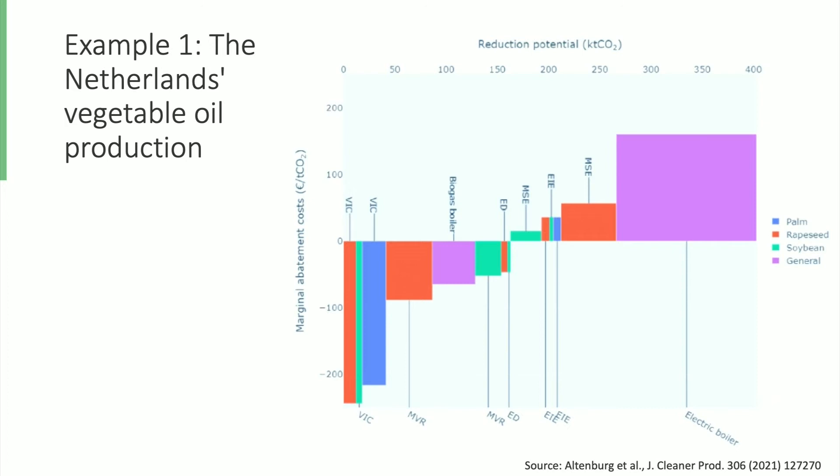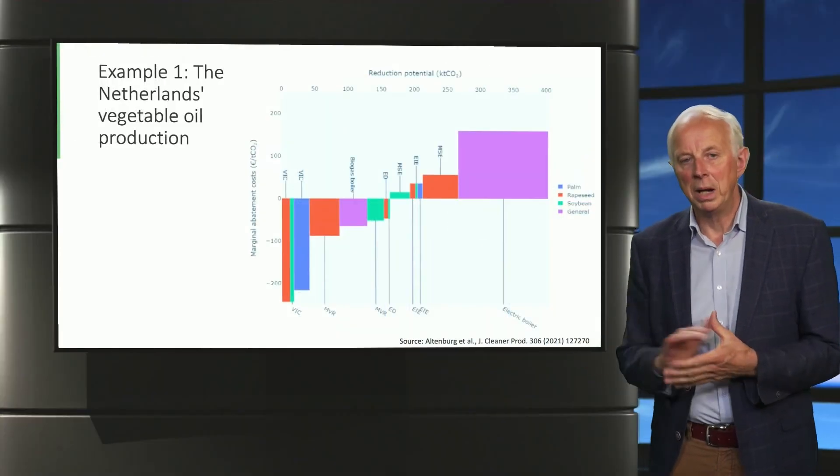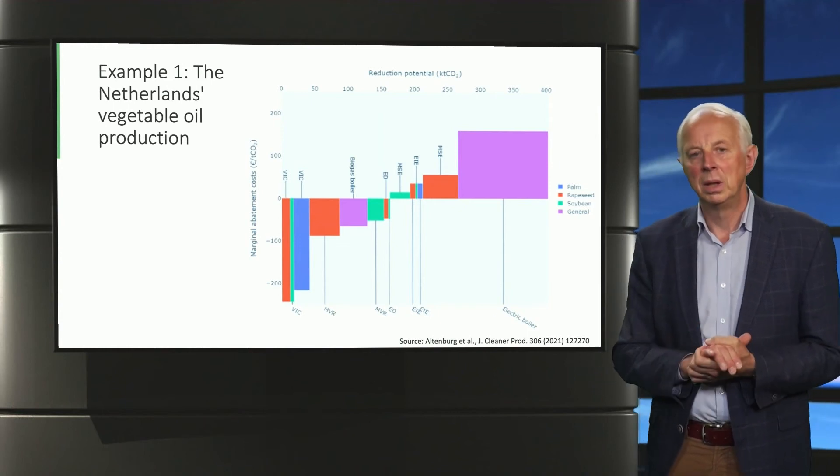It starts on the left with a number of energy efficiency measures, denoted with their respective abbreviations, and these are often relatively cheap, indicated by the negative costs. Then there are some supply options. For instance, biogas can be produced as a by-product and then used for heating processes.